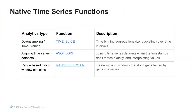We have introduced native time series functions. We could do all of these analytics earlier with window functions or window frame functions, but we've heard from customers that it can get cumbersome at times. So we've introduced these native time series functions that make working with your time series data very easy. Of all of these native functions, I would like to touch upon the as-of joins and range between, which went into GA — general availability — very recently.